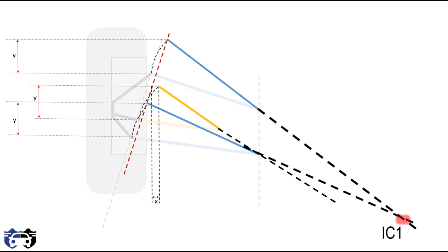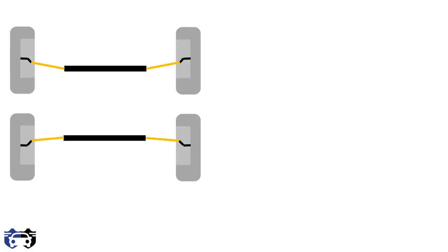So this is how bump steer occurs. Now bump steer can cause toe-in or toe-out depending upon the position of steering rack. If the rack is placed behind the spindle, it will cause tire to toe out at the bump.